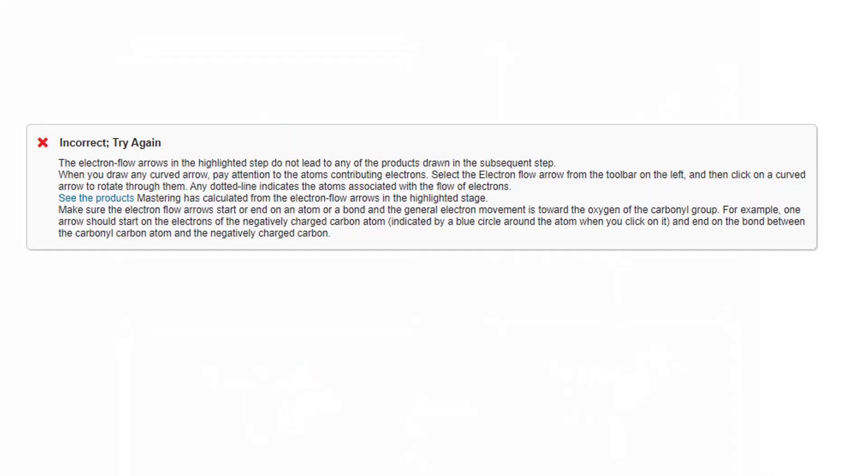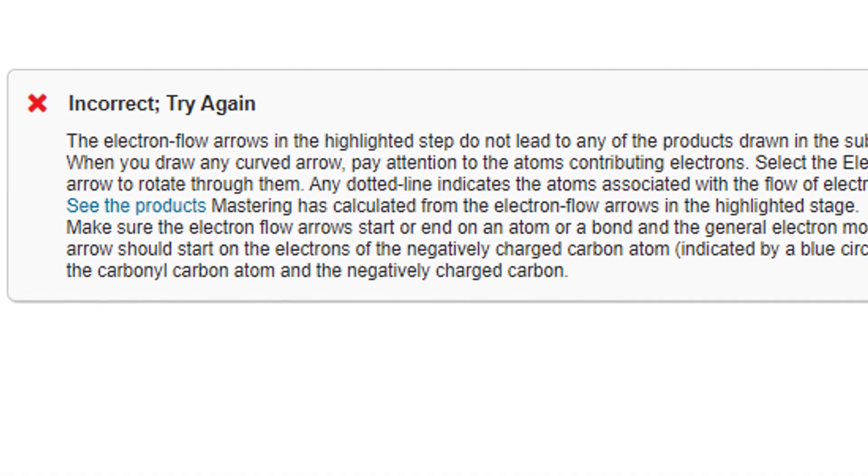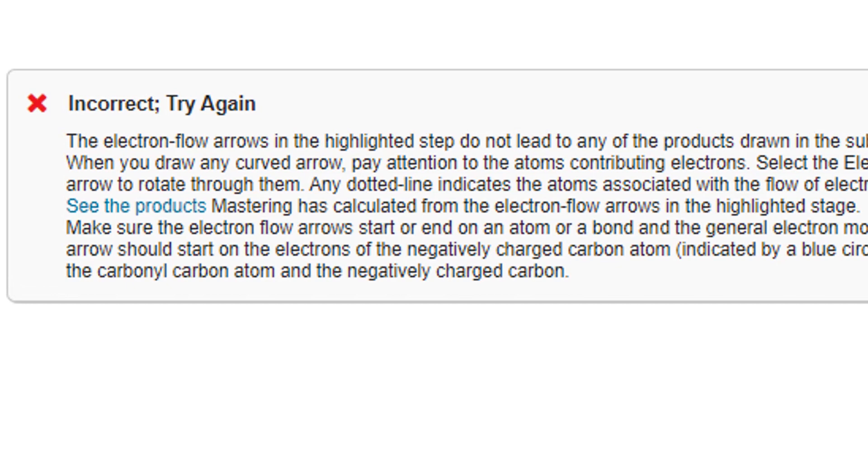The system evaluates the chemical logic of the submitted mechanism and returns feedback specific to the error. Feedback on wrong answers can help guide students through their misconceptions. When possible, the system calculates the species that would be created by the proposed electron flow.